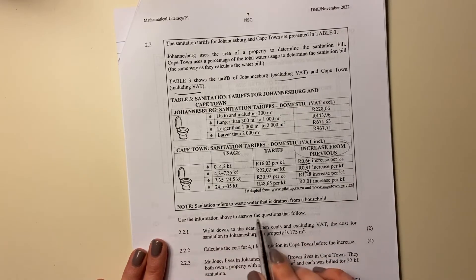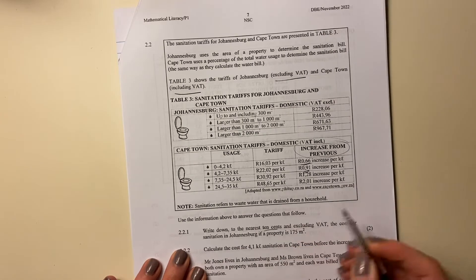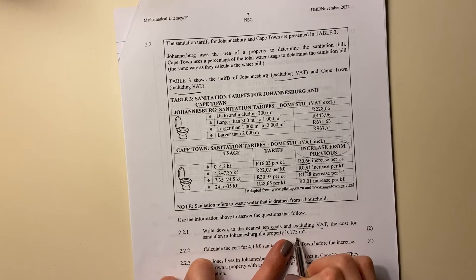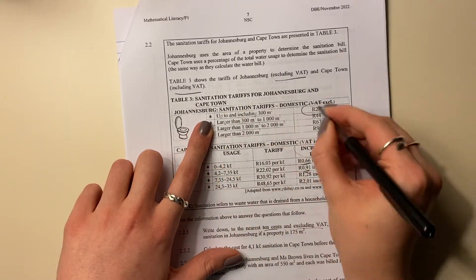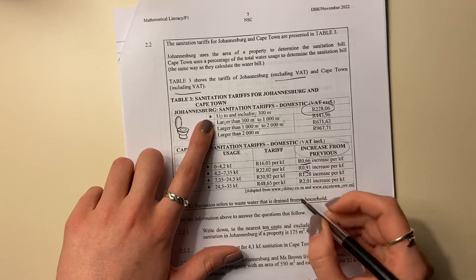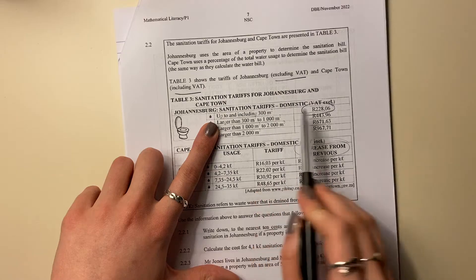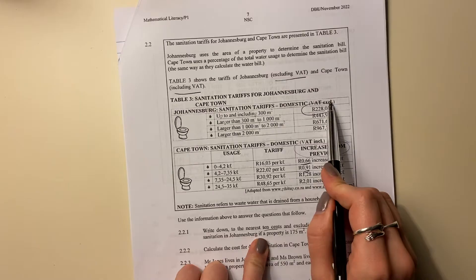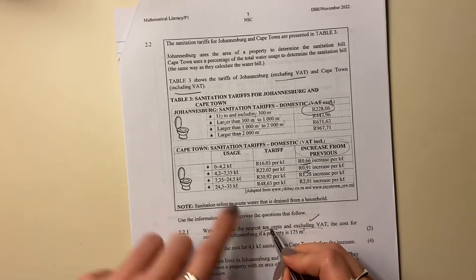It says use the information above to answer the questions that follow. Write down to the nearest 10 cents, that's important, and excluding VAT, the cost for sanitation in Johannesburg if a property is 175 meters squared. So now if it's 175 meters squared, we just have this flat rate of 228.06 because we know that 175 is less than 300. But it's excluding VAT because that is what was given to us up front. So we don't really have to do anything to meet that criteria, but then we have to round it off to the nearest 10 cents.